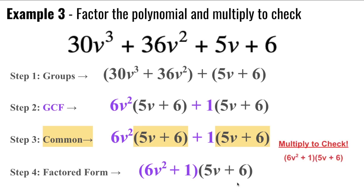Let's multiply to check using double distributes. 6v squared times 5v is 30v cubed, 6v squared times 6 is 36v squared.